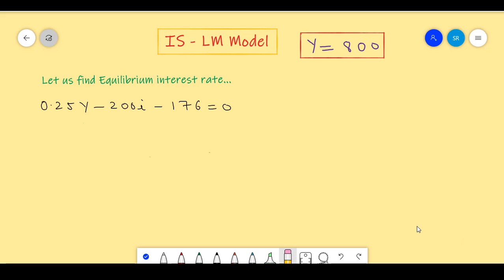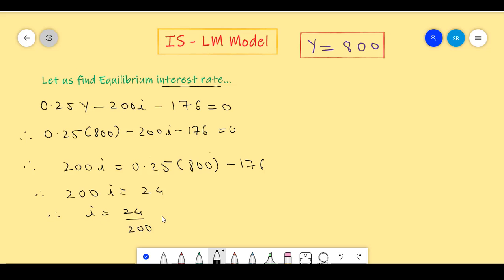We got our equilibrium output. Now, let's substitute this in one of our equations to get the equilibrium interest rates. Substituting 800 in this equation, we get 0.25 into 800 minus 200I minus 176 equals 0. Therefore, we can write 200I equals 24. Hence, I equals 0.12.